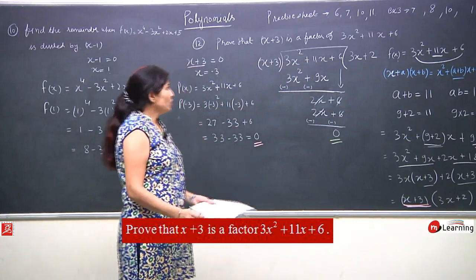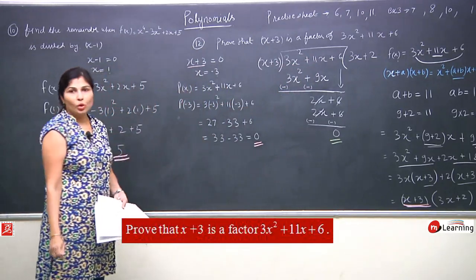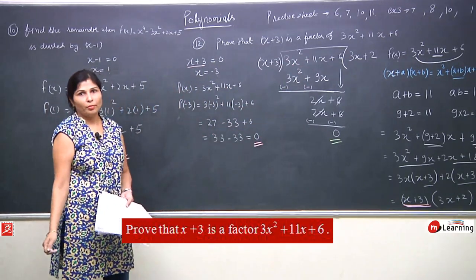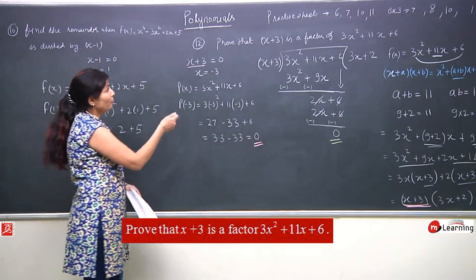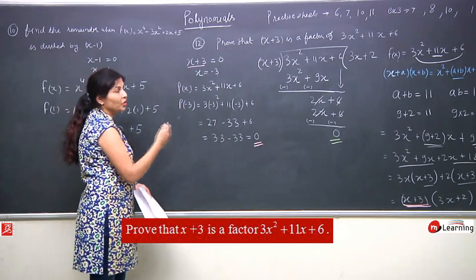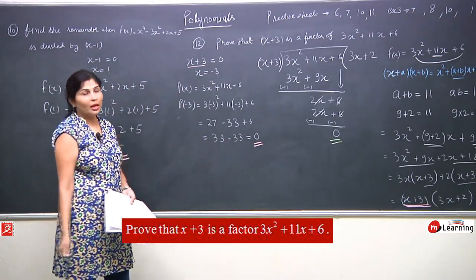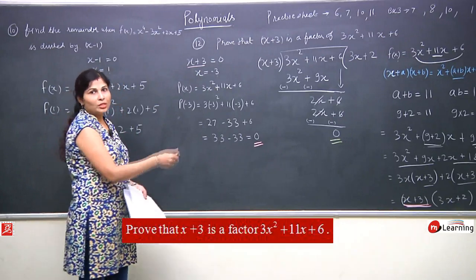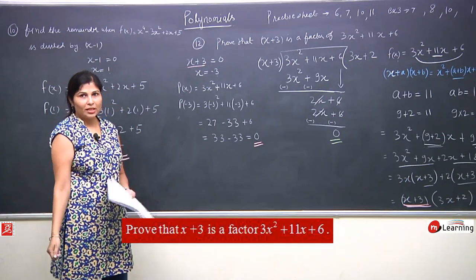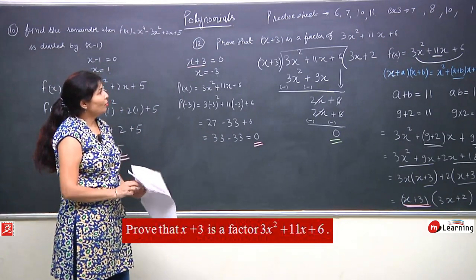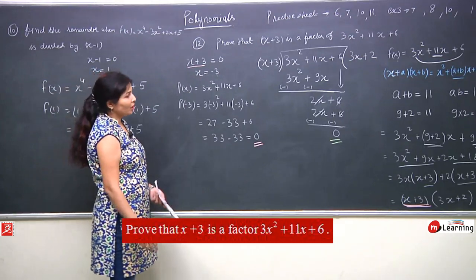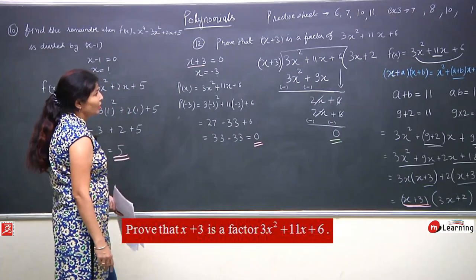In conclusion, all three methods — remainder theorem by putting the value, long division, and middle term splitting — give x plus 3 as a factor of this polynomial. Depending on the question, you can choose any method. If a specific method is required, follow that; otherwise use whichever is easiest.